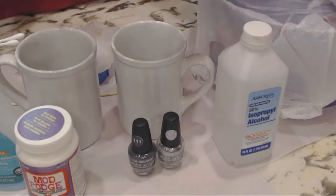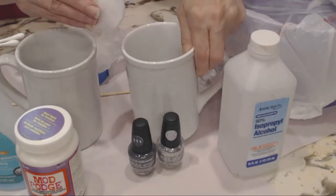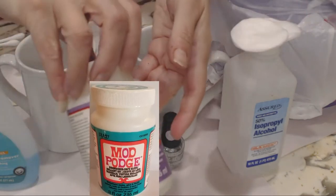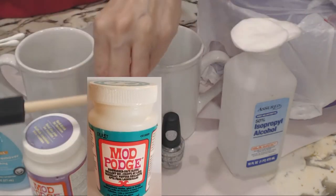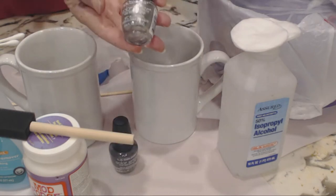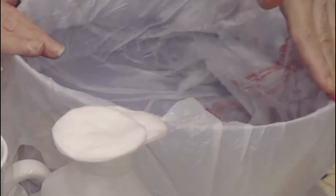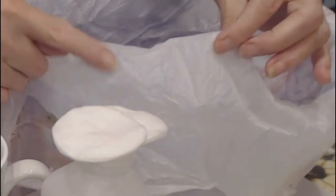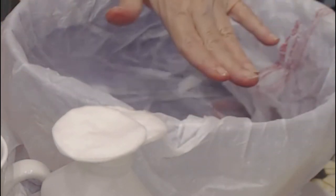Cotton and alcohol to wipe down dirt and oil. Mod Podge dishwasher safe, you'll see that at the end. LA colors nail polish in gray graphite, silver and platinum. Tempered water, not too hot, not too cold. I'm using a regular bowl.